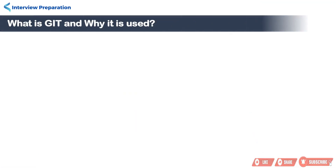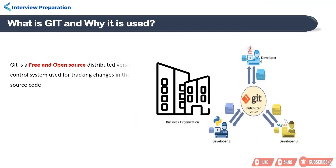Git is a free and open source distributed version control system used for tracking changes in the source code.